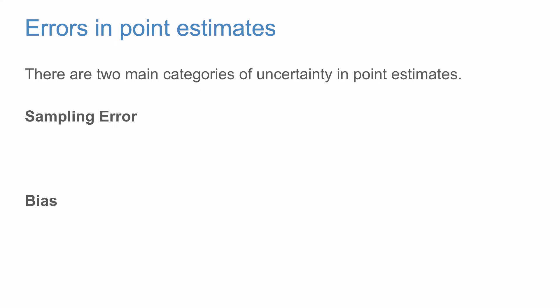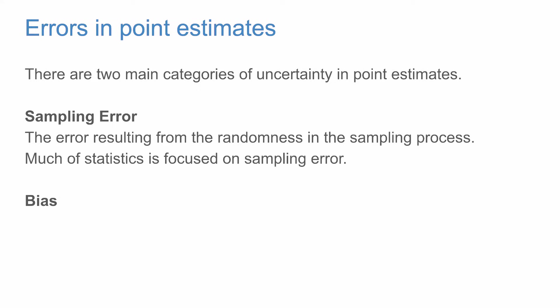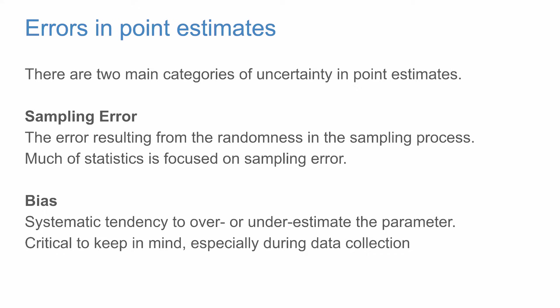There are two main categories of uncertainty in point estimates. The first is sampling error — error resulting from the randomness in the sampling process itself. Much of statistics is focused on understanding sampling error. The second is bias, which is a systematic tendency to over- or underestimate the parameter. Bias is critical to keep in mind, especially during data collection. If data is collected in a haphazard way, any bias in the sample may be impossible to correct.